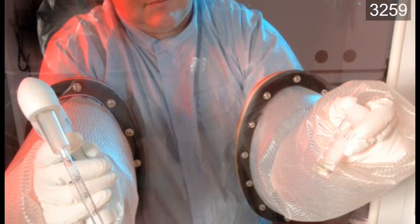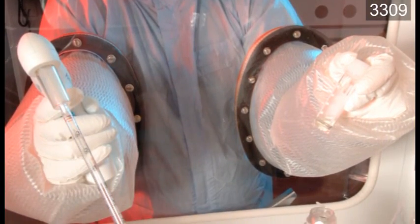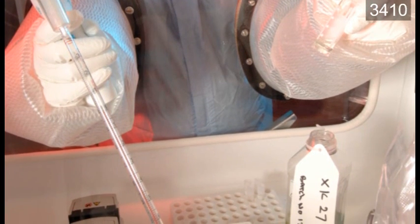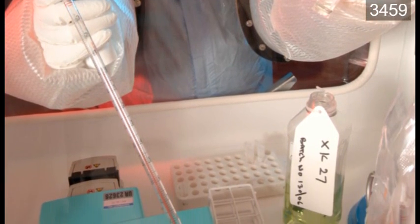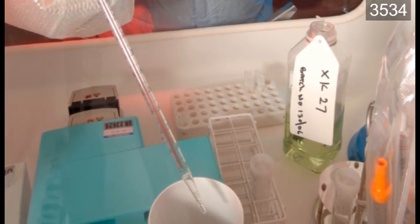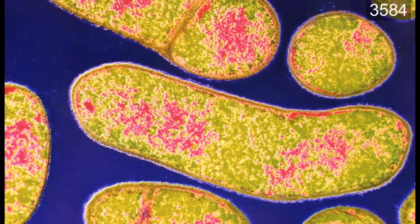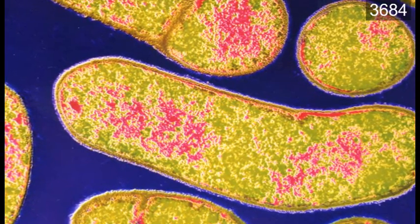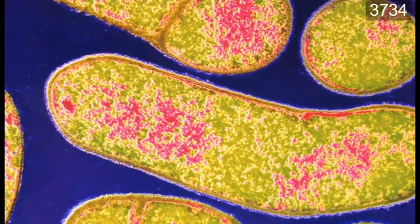In addition to being able to offer a fairly routine fermentation, for example E. coli, we're also able to handle organisms at high levels of containment. For example, Clostridium botulinum, we would handle as an ACDP3 organism, which effectively means every part of the process is contained and cannot escape to the environment.